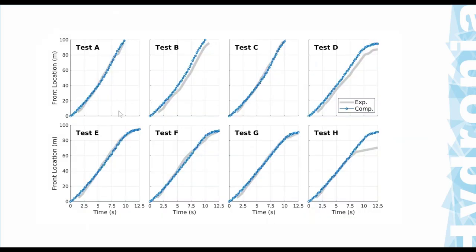To corroborate results numerically, comparisons across eight tests with different parameters show experimental data versus numerical values for frontal wave location as a function of time. In almost all experiments the comparison is very close, with only one test showing more deviation. The overall comparison confirms the model performs well across varying parameter conditions.